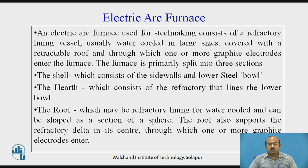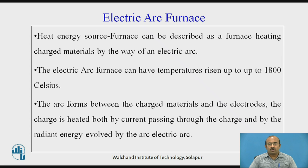The roof also supports the refractory delta at its center through which one or more graphite electrodes enter. The heat energy source for this furnace is an electric arc, which can raise temperature up to 1800 degrees Celsius. The arc forms between the charged material and the electrodes. The charge is heated both by current passing through the charge and by the radiant energy evolved by the electric arc.